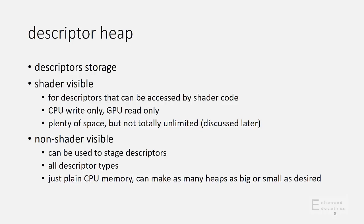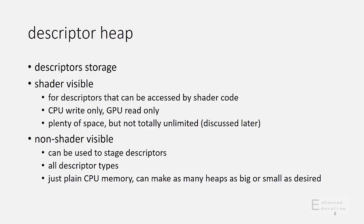A descriptor heap is a storage for descriptors. It's basically just an array of descriptors in memory. Descriptor heaps are broadly categorized in two classes, shader visible and non-shader visible. The shader visible descriptor heaps function to hold descriptors that the GPU and shaders are referencing during execution, whereas non-shader visible descriptor heaps largely function as a way for applications to stage descriptors on the CPU perhaps before they want to upload them to a shader visible descriptor heap. It's not actually a requirement to do that, though. It's perfectly fine for an application to write or generate a descriptor directly into a shader visible descriptor heap.